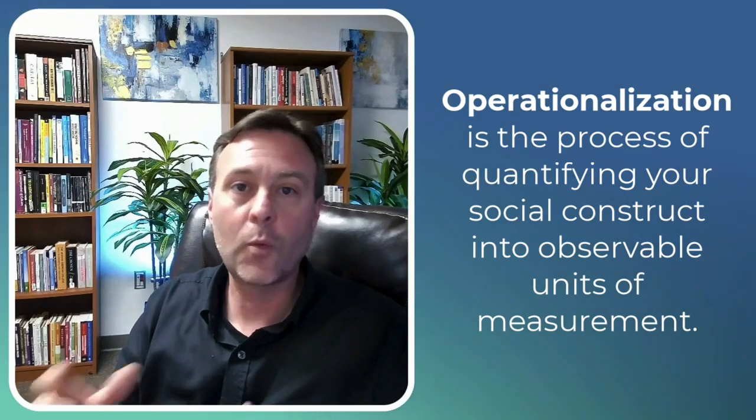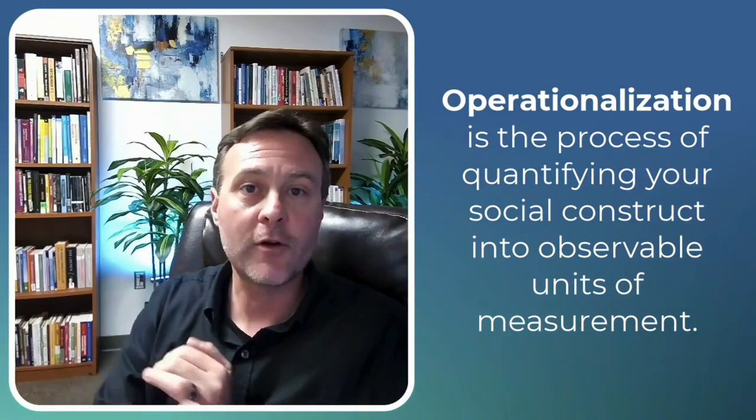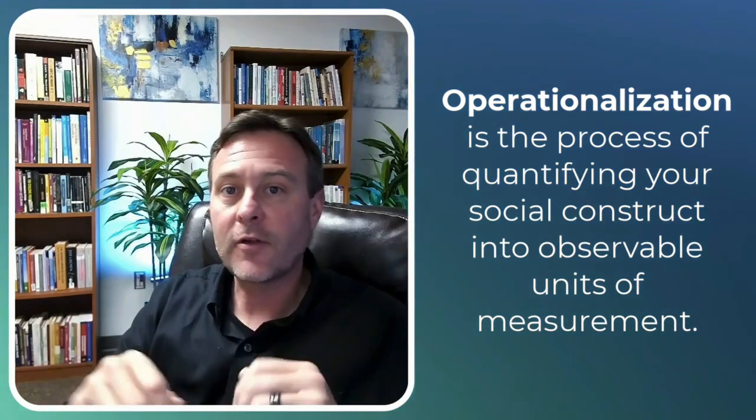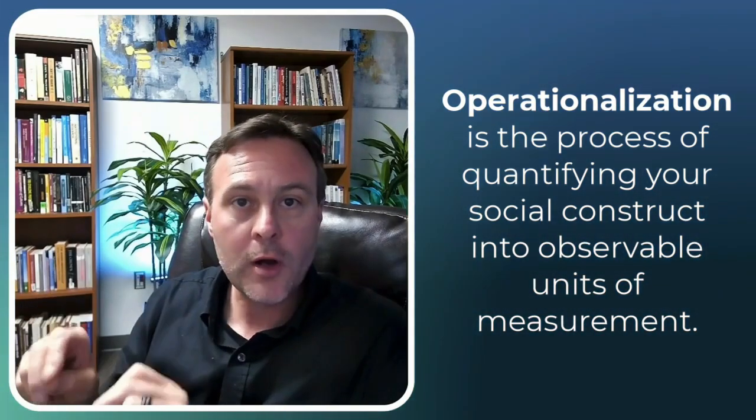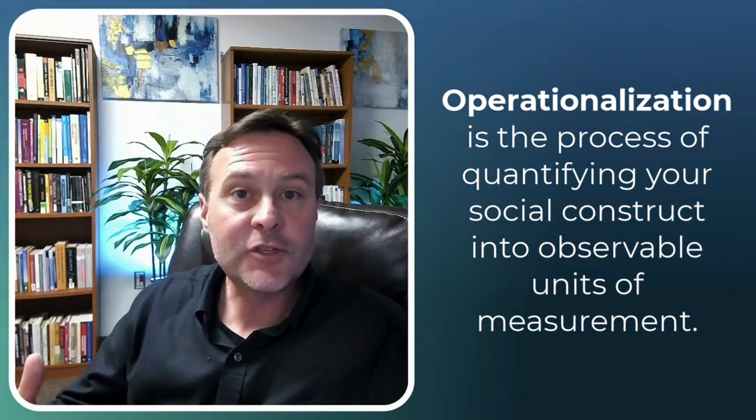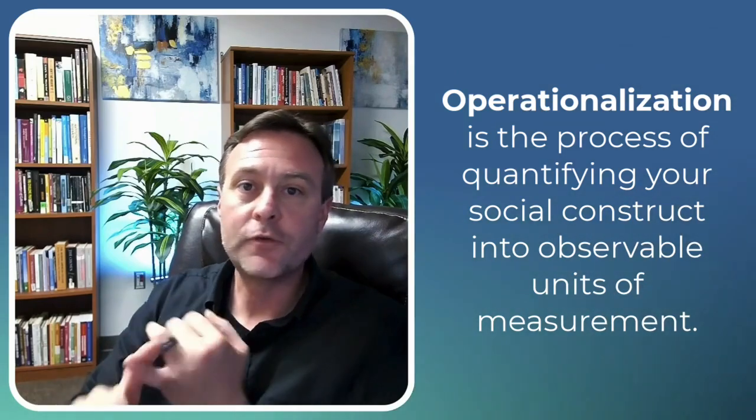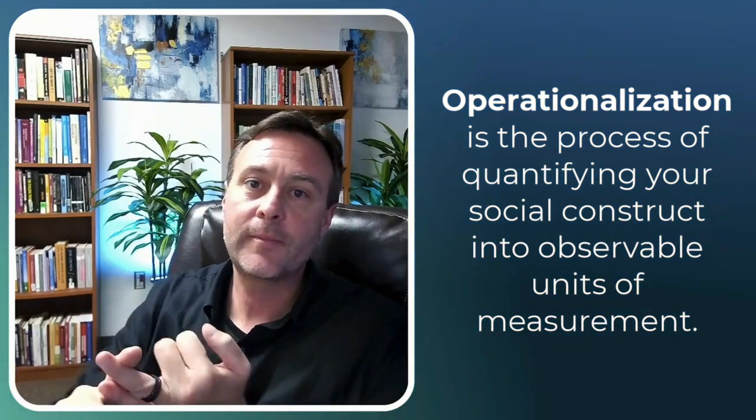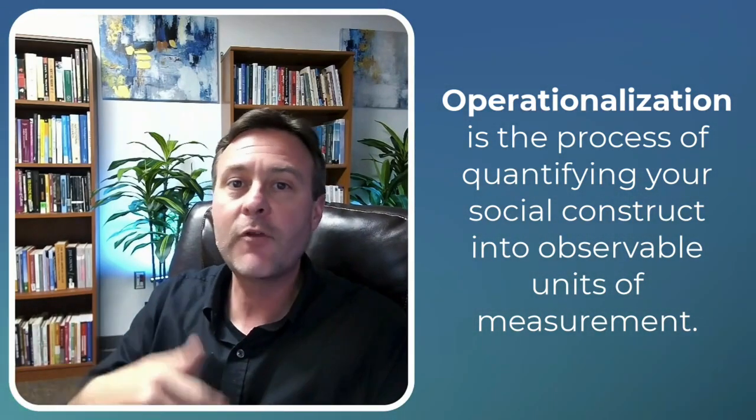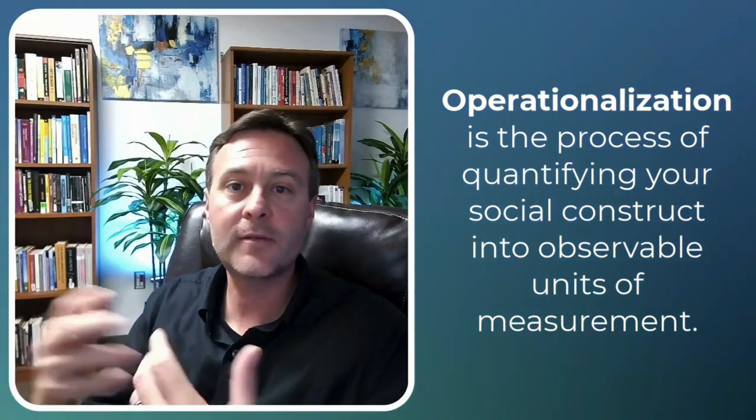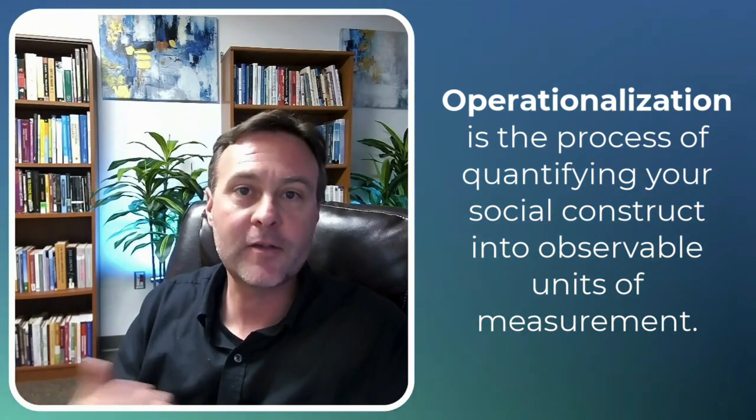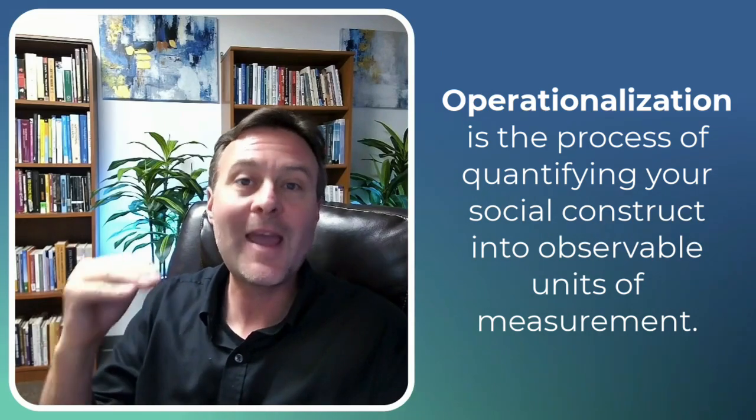If it is something like workplace satisfaction, it could be a survey. Maybe there's a scale. They answer a Likert scale, one through five on multiple questions, and we average it up and give them a score. If it's something like civic engagement, it could be particular behaviors. Did you vote in the last election? Did you vote in the election before that or the primary? Have you ever donated money to a campaign? Have you volunteered for a campaign? Have you posted political messages or topics on your social media? So we can have different behavioral markers.